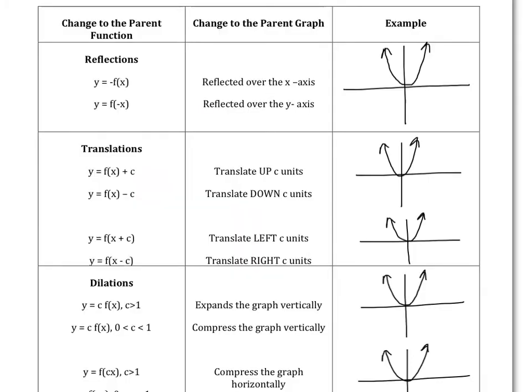So let's look at how these different changes occur. So we have reflections, first of all, like we just saw. If you have a negative out front of your function, that means your graph is reflected across the x axis, like we just saw.